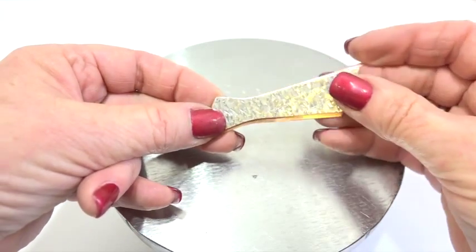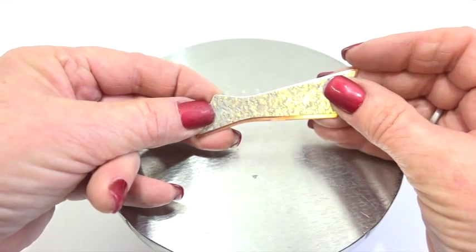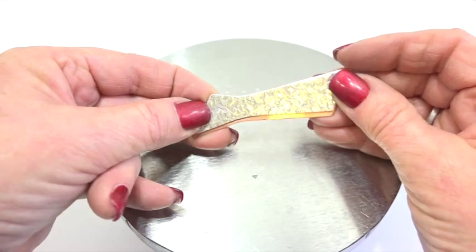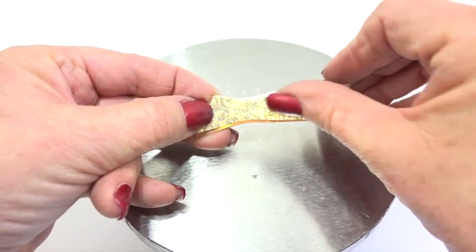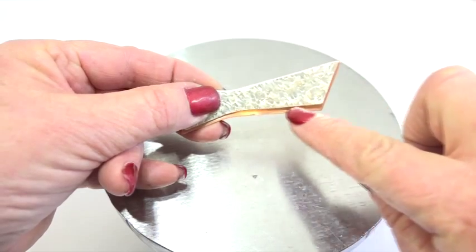I just stuck it back into the pancake die and just cut the edge off so I have a little piece of scrap silver now that's about that length.